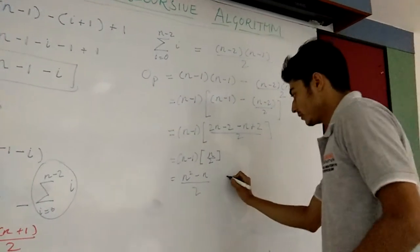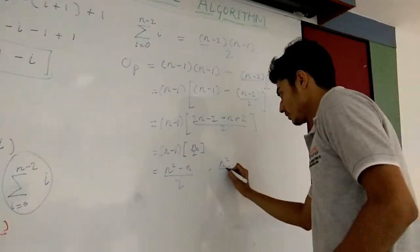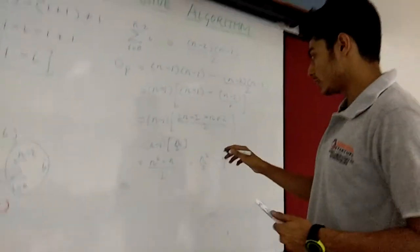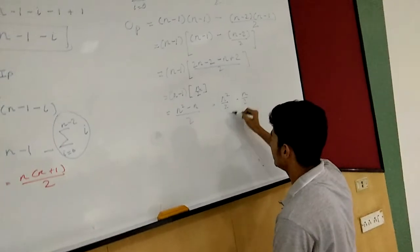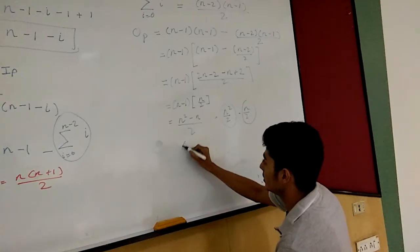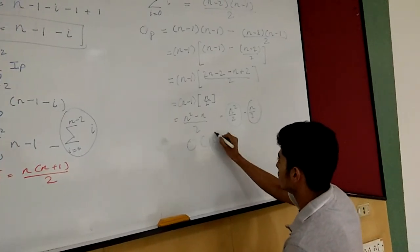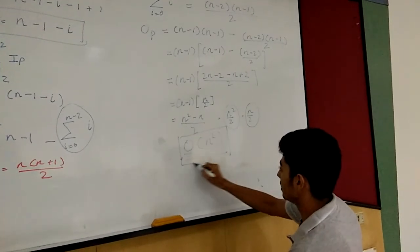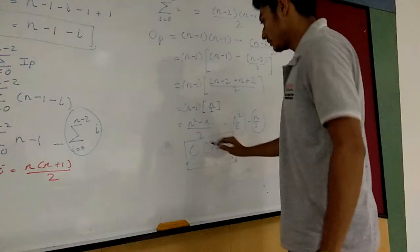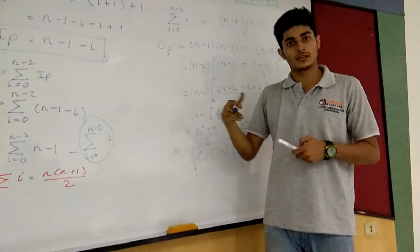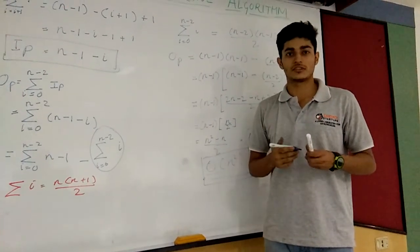By simplifying, we get n²/2 minus n/2. Now calculating the time complexity, since we have a higher degree term we can eliminate the lower degree term. So eventually the time complexity simplifies to O(n²). Hence, on doing mathematical analysis of selection sort, we get this result. Similarly, you can perform mathematical analysis for other non-recursive algorithms as well. Thank you.